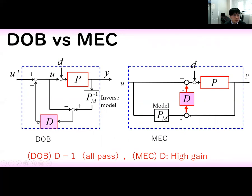The differential compensator D is given like this. In the case of disturbance observer, the filter D is given as an all-pass filter. On the other hand, in the case of MEC, D is given as a high-gain filter.